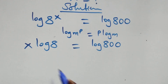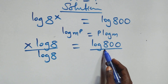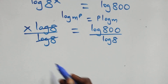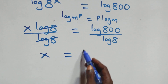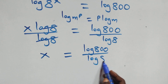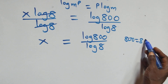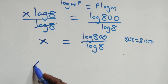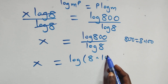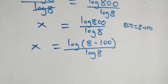The next step, we divide both sides by log 8. Log 8 cancels each other, and we have x equals to log 800 over log 8. Then here we can write 800 as 8 times 100, so what we have becomes x equals to log(8 × 100) over log 8.